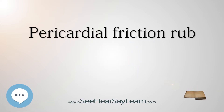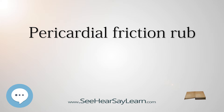A pericardial friction rub, also called a pericardial rub, is an audible medical sign used in the diagnosis of pericarditis. Upon auscultation, this sign is an extra heart sound of to and fro character, typically with three components — one systolic and two diastolic.